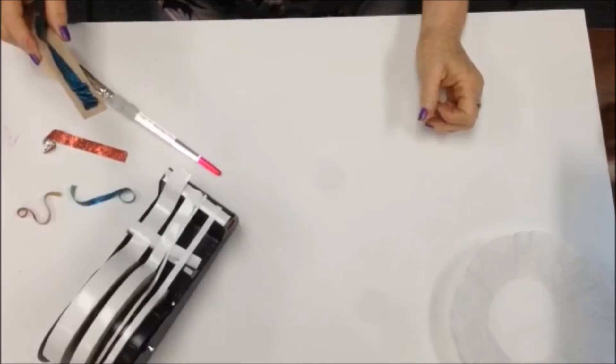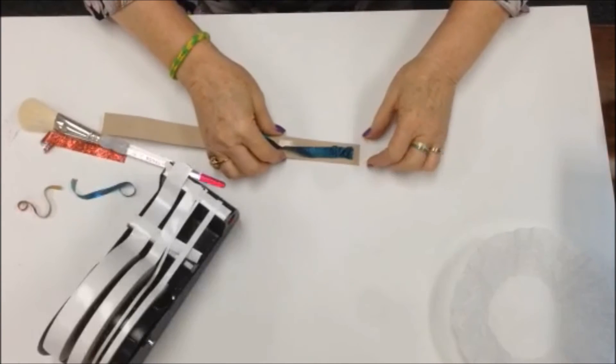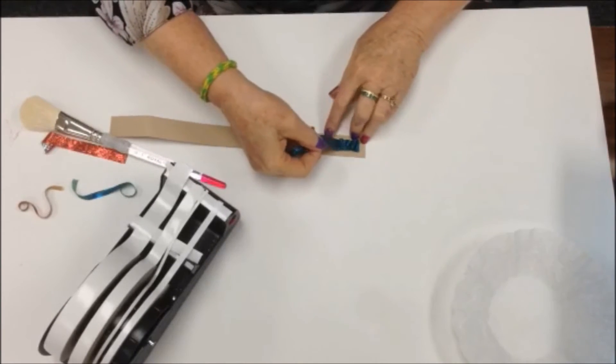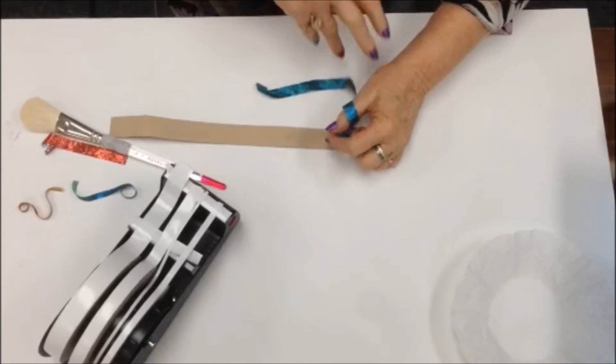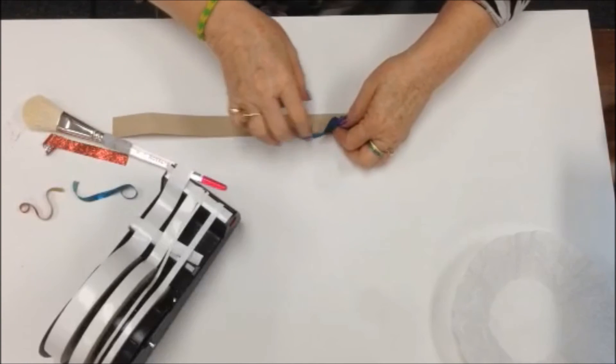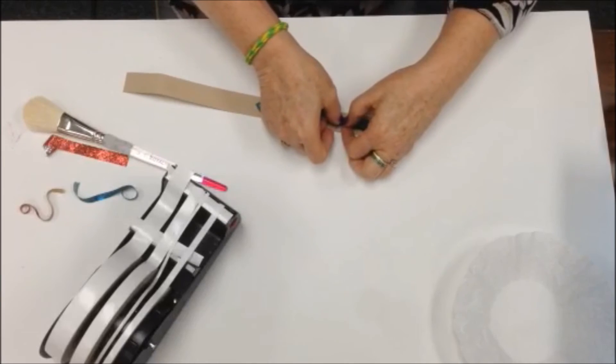And something else you can do—sometimes you put ruffles down on the bottom of your card or the top of your card. And what you do is you simply lay a piece of terrific tape down on your card stock and then slowly feed your glittered ribbon into that. And I'll show you.